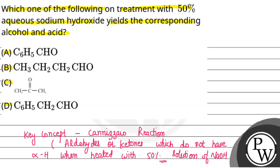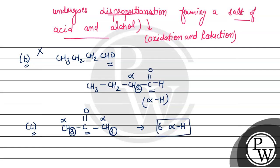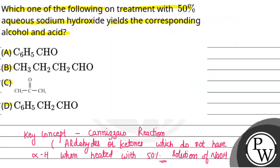Next, option C is a ketone — propanone, which is CH3-C(=O)-CH3. The carbonyl group is the functional group. Both adjacent carbons are alpha carbons, each with 3 hydrogens, giving a total of 6 alpha hydrogens. So this compound also has alpha hydrogen and will not undergo the Cannizzaro reaction.